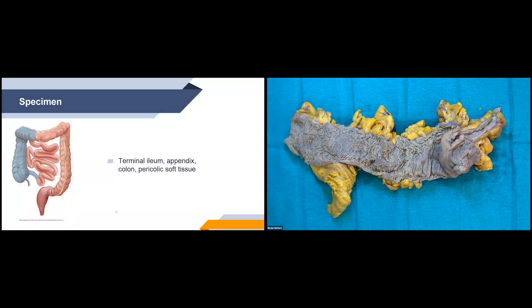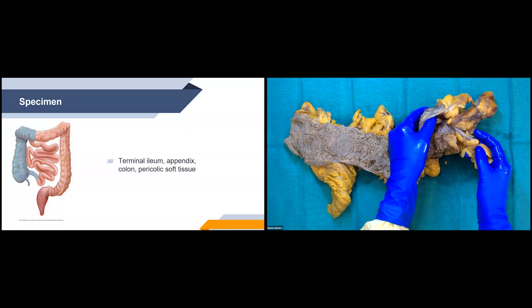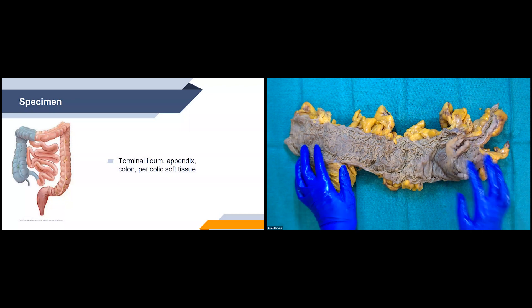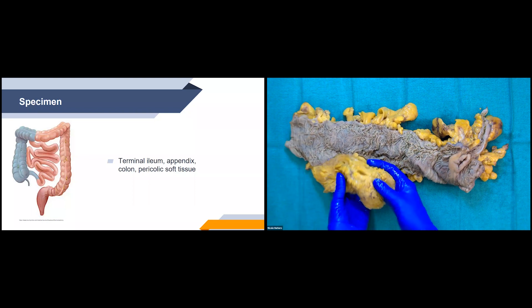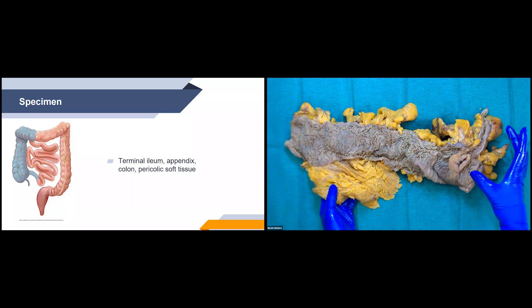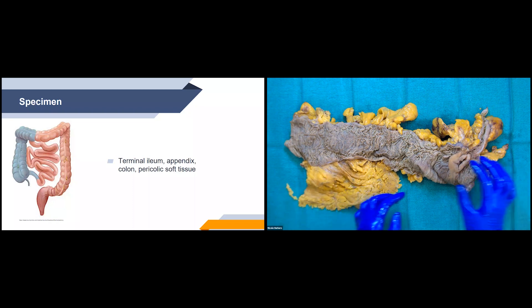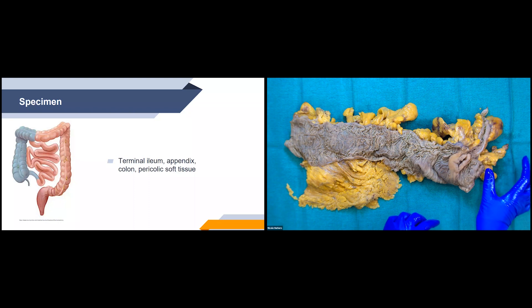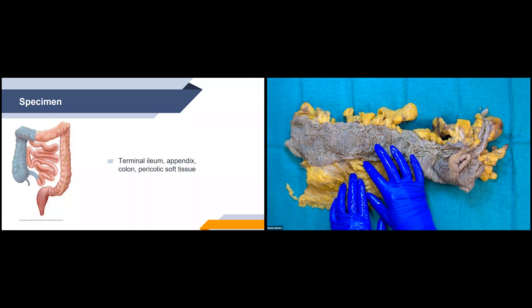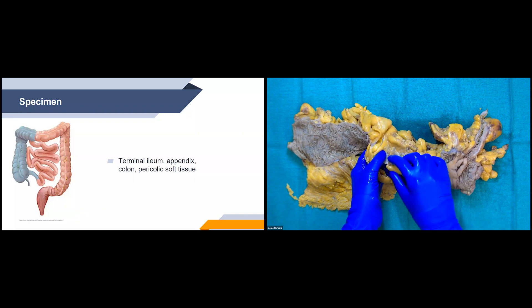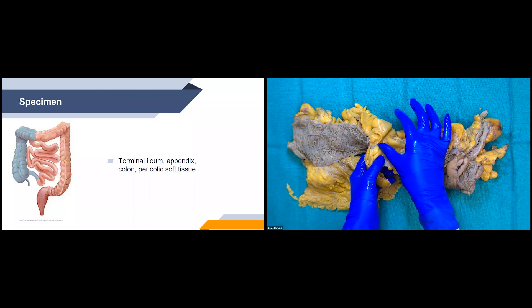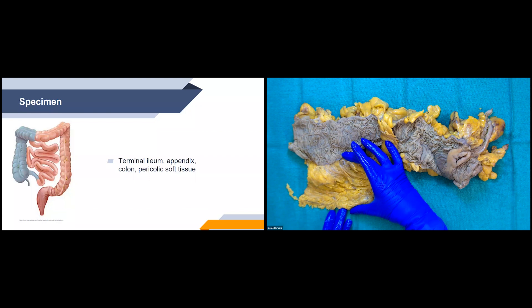The specimen includes the terminal ileum, the appendix, the colon, and the pericholic soft tissue. For this one we also have omentum. For the portions of bowel, we'll want to give a measurement in length and also open circumference for each part. For the appendix, we'll give total length and diameter. For the pericholic soft tissue and omentum, we'll give one measurement of greatest depth — measured from where it's inserting onto the bowel to where the surgeon had to resect.